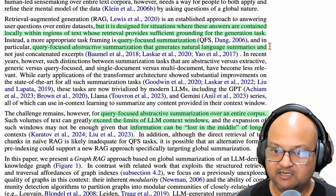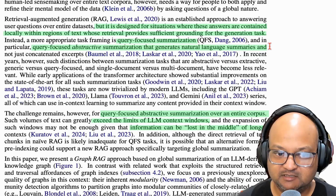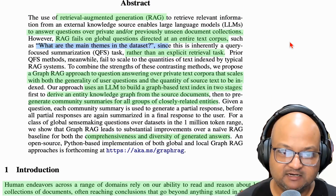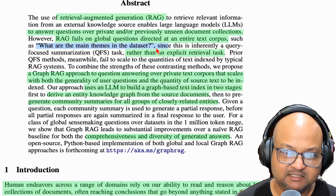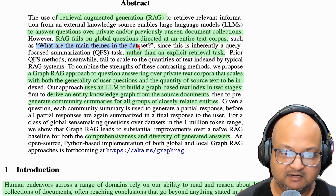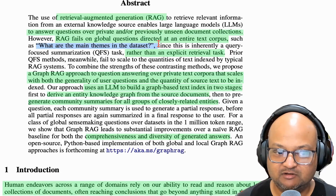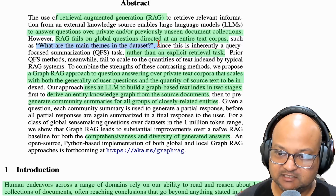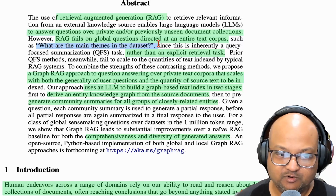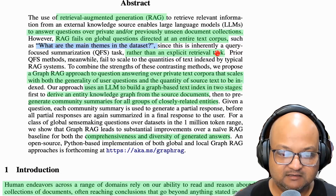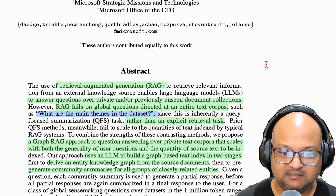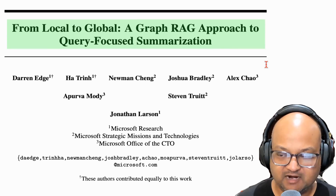A simple query like that could be: tell me the major themes in this document. In scenarios like that, the semantic search that RAG depends on doesn't quite work, because there isn't going to be a great semantic match between a query like 'what are the major themes in this corpus' and the terms in the corpus. Answering this query requires some understanding of what the concepts in the corpus are.